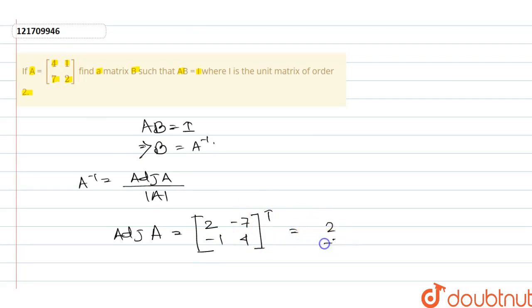So 2, 1, minus 7, 1, minus 1, 4 is the cofactor adjoint matrix.